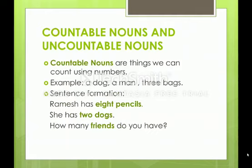Countable nouns are things we can count using numbers. Anything that you can count comes under countable nouns. For example: a dog, a man, three bags. In sentences — 'Ramesh has eight pencils' — we can count the pencils. 'She has two dogs' — we can count the dogs. 'How many friends do you have?' — you may have three, four, or ten friends. All these fall under countable nouns.